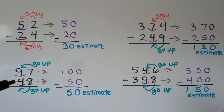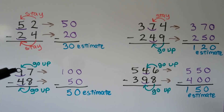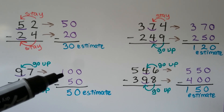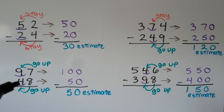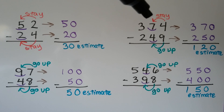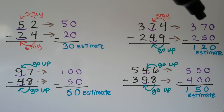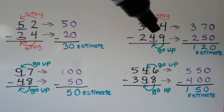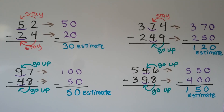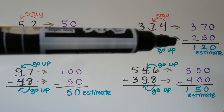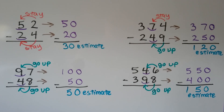For 97 minus 48, this 7 is telling the 9 to go up one more ten. One more ten than 9 tens is 10 tens, so that would be 100. The 8 tells the 4 to go up to a 5 and it becomes a 0, so we have 100 minus 50 — our estimate is 50. For 374 minus 249, rounding to the tens place: the 4 tells the 7 to stay the same, so it rounds to 370. The 9 tells the 4 to go up to a 5, so it rounds to 250. 370 minus 250 is about 120.